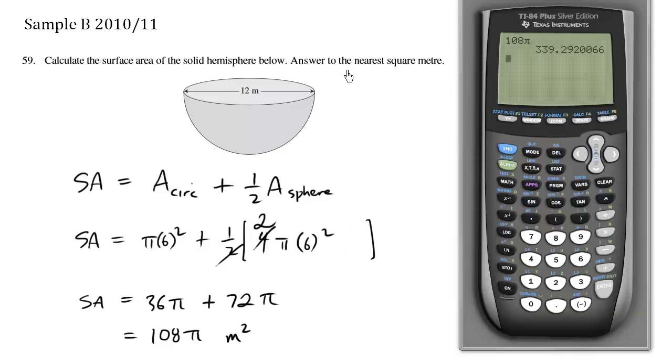This question asks to answer to the nearest square meter. Using our calculator, 108 pi is 339.3 meters squared. Rounding to the nearest square meter, this is approximately 339 meters squared.